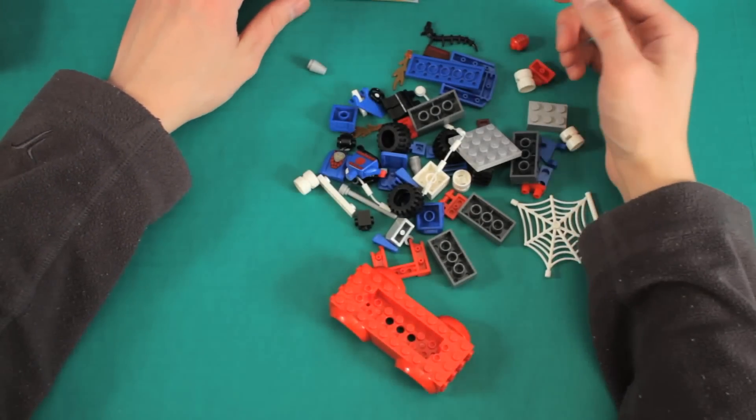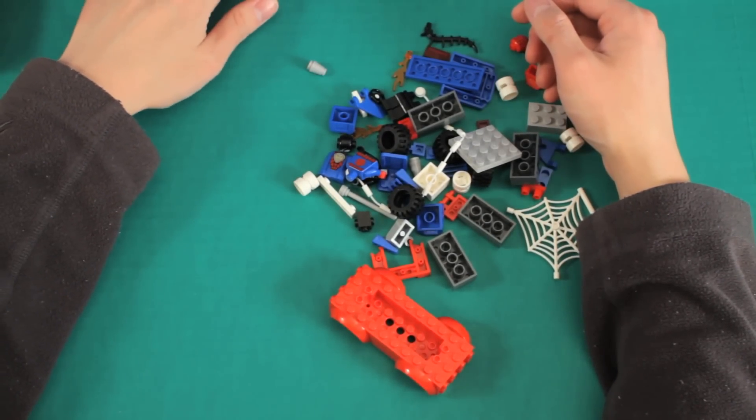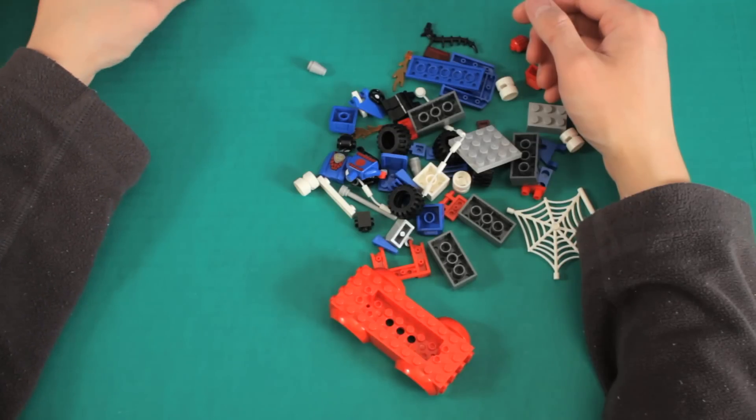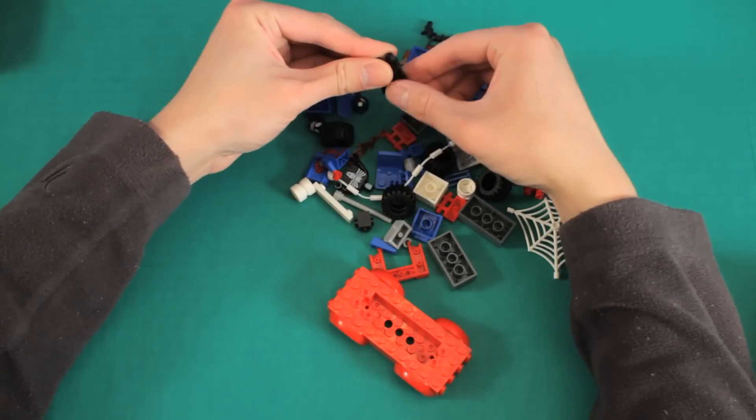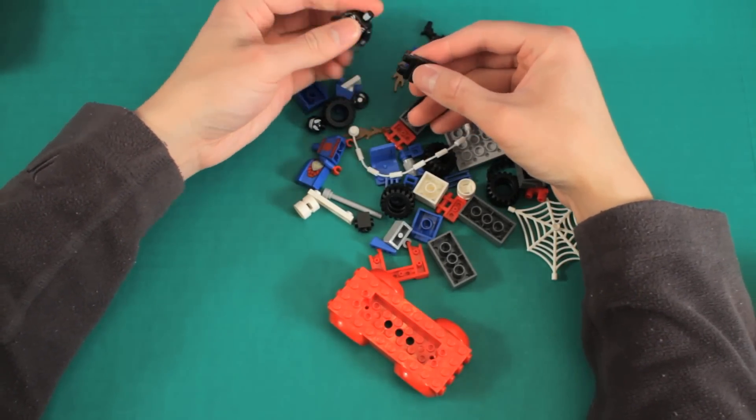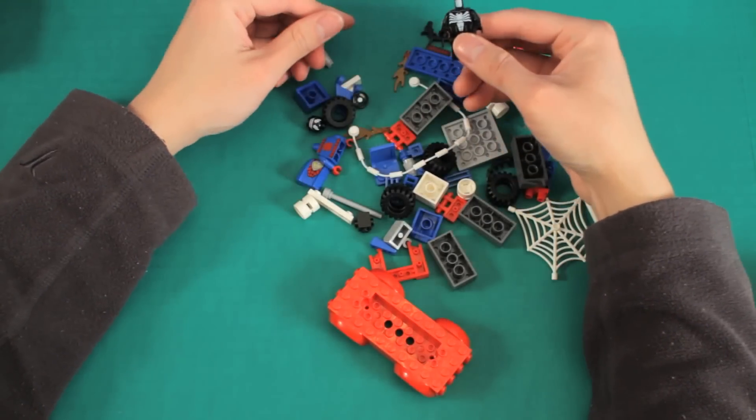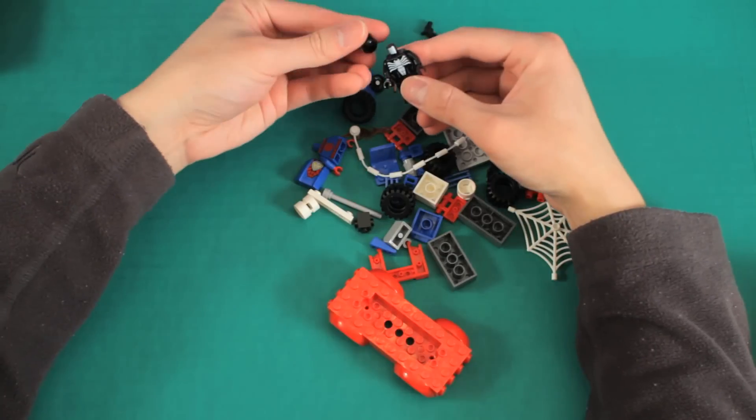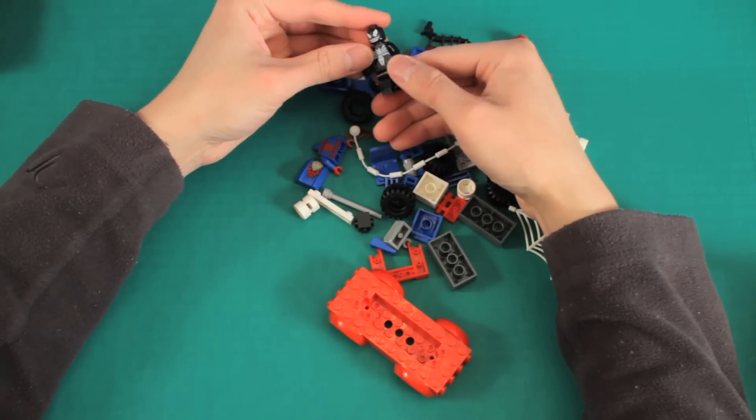Alright. Let's see what's on the first page. I know some people who can do this without even looking at anything. First is Venom. Let's put Venom together. Now where is his head? Here it is. There you go.